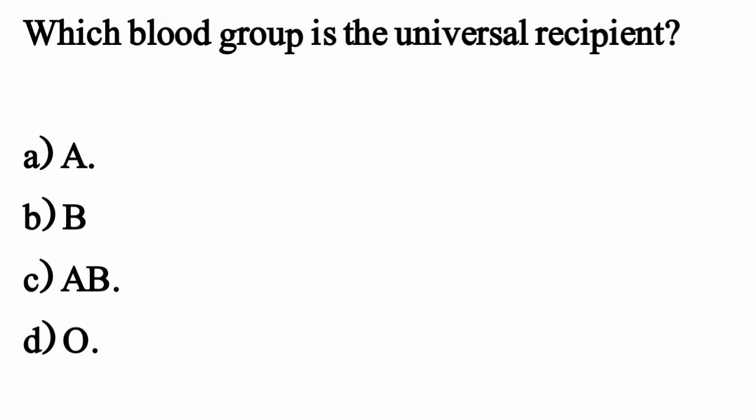Which blood group is the universal recipient? The correct option is Option C: AB.